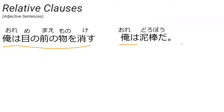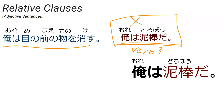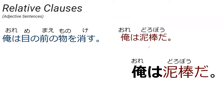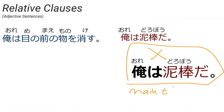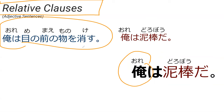Does 俺はどろぼうだ have a verb in it? It doesn't. Because of that, you cannot make a relative clause out of 俺はどろぼうだ — it's not possible. So for our purposes, you do not have to change anything from 俺はどろぼうだ. This is basically the main essence of the sentence — our goal sentence. If we wanted to describe it with some extra information from a relative clause, we could modify things to do so.